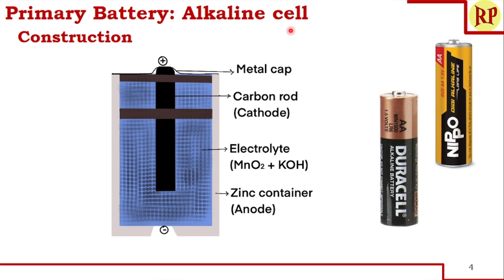Once we break open this battery further, we will see a black color rod, which is a carbon or graphite rod, acting as the cathode. To hold this black color rod, there is a shoulder or collar. The electrolyte here is different: we still have MnO2, but the acidic electrolyte NH4Cl has been replaced with KOH, which is alkaline in nature. This electrolyte is made into a paste with the help of starch and placed around the cathode inside the battery.